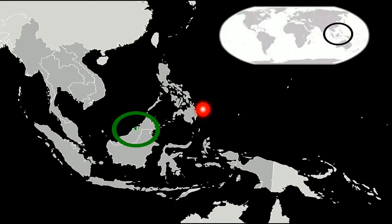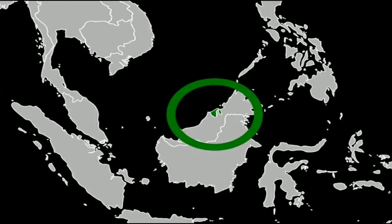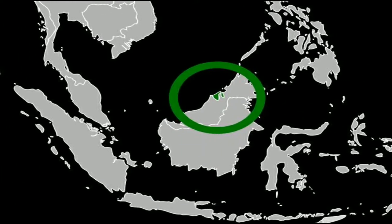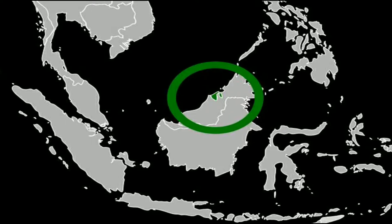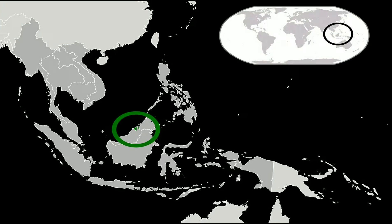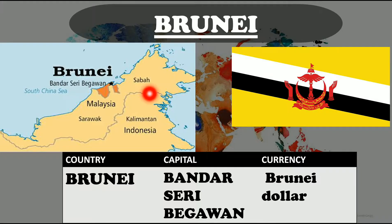The next country is Brunei — a very small country. It is a sovereign state located on the north coast of the island of Borneo in Southeast Asia. Apart from its coastlines with the South China Sea, the country is completely surrounded by the state of Sarawak, Malaysia. This is the map of Brunei. Its capital is Bandar Seri Begawan. Its currency is the Brunei Dollar. And this is the flag — a yellow field cut by black and white diagonal strips with the crest of Brunei in the center.